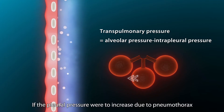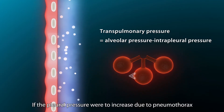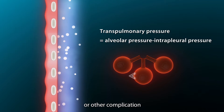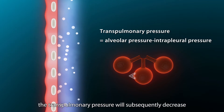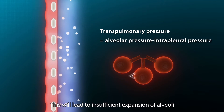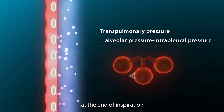If the pleural pressure were to increase due to pneumothorax or other complications, the transpulmonary pressure will subsequently decrease. This will lead to insufficient expansion of alveoli at the end of inspiration.